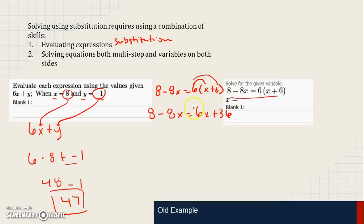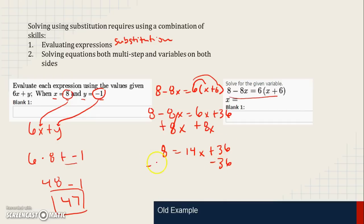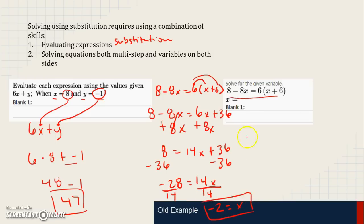Now we use inverse operations. Since there's an x on both sides, we eliminate the variable term on one side by adding 8x to both sides, leaving us with 8 equals 14x plus 36. Then we subtract 36 from both sides: 8 minus 36 is negative 28 equals 14x. Dividing both sides by 14 gives us x equals negative 2. The takeaway is solving one equation with one variable.